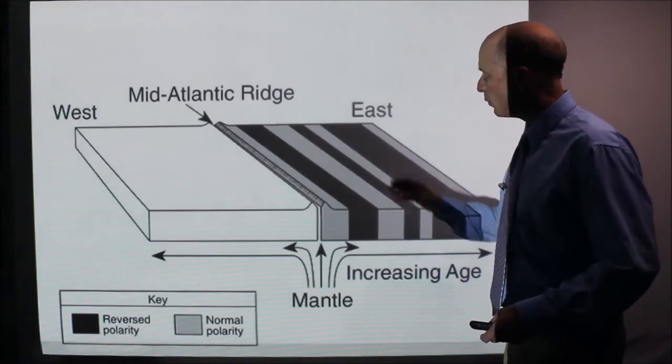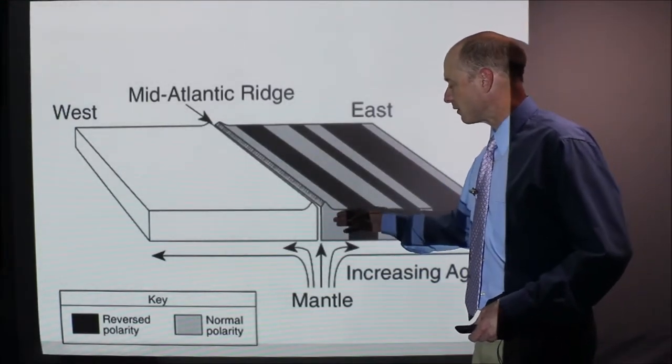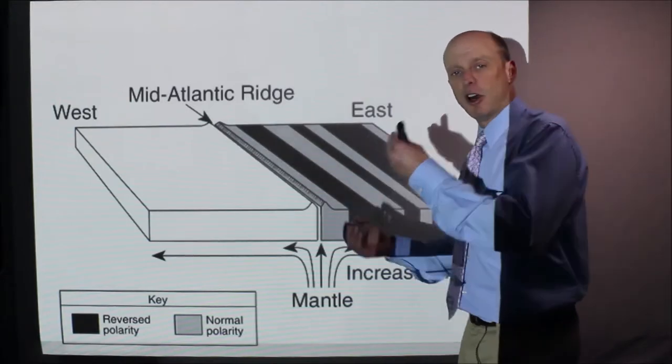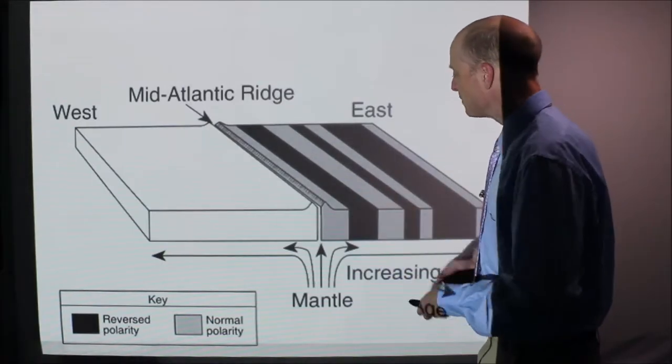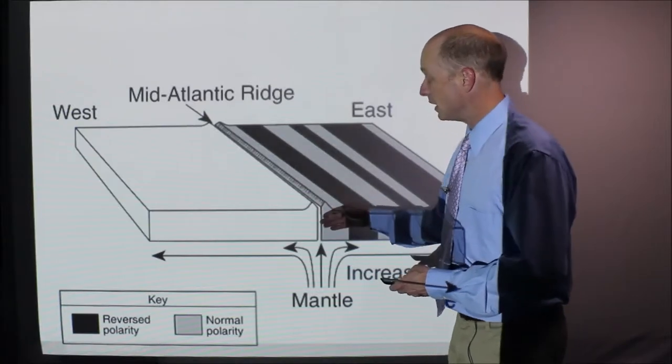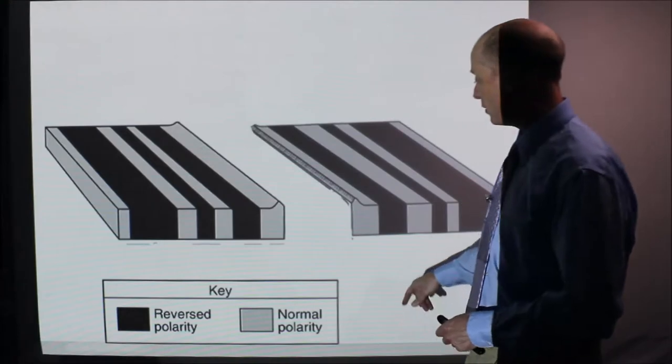So now the reversed is dark and the normal is light gray. Basically what we see is if you were able to get the polarity of the rocks, you see these stripes and bands and they're different thicknesses because how long it exists in one polarity or the other is not consistent. And what we see here on this side of the mid-Atlantic ridge would be a matching pattern.